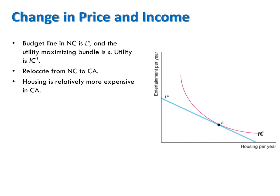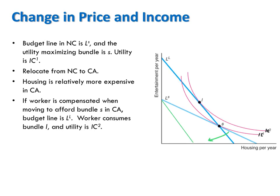Consider a consumer who maximizes her utility by consuming housing and entertainment each year. While living in North Carolina, she faces this budget constraint and chooses bundle S on Indifference Curve 1. Now suppose her employer wants her to relocate from North Carolina to California, where the price of housing is more expensive. Increasing the price of housing will therefore cause her budget line to rotate inward, shrinking her affordable set. Knowing this, suppose her employer decides to increase her income enough to make the bundle she chose before the move still affordable after the move.